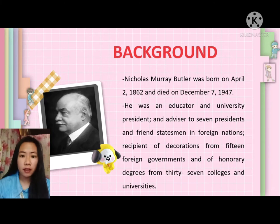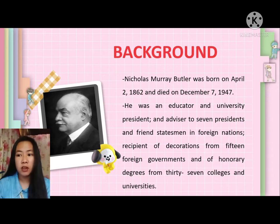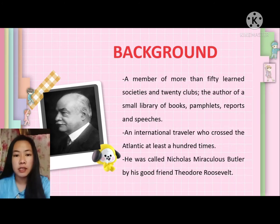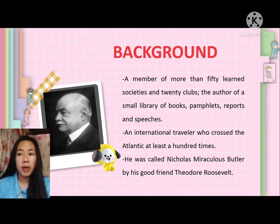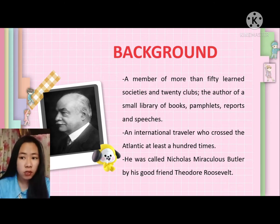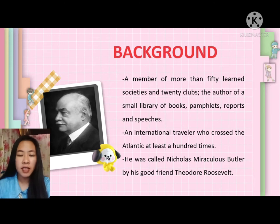For the background of the author: Nicholas Murray Butler was born on April 2, 1862 and died on December 7, 1947. Butler was an educator and university president, an advisor to seven presidents and friend of statesmen in foreign nations, recipient of decorations from 15 foreign governments, and of honorary degrees from 37 colleges and universities. Butler was also a member of more than 50 learned societies and 20 clubs, the author of a small library of books, pamphlets, reports, and speeches, and an international traveler who crossed the Atlantic at least a hundred times. He was called Nicholas Miraculous Butler by his good friend Theodore Roosevelt.